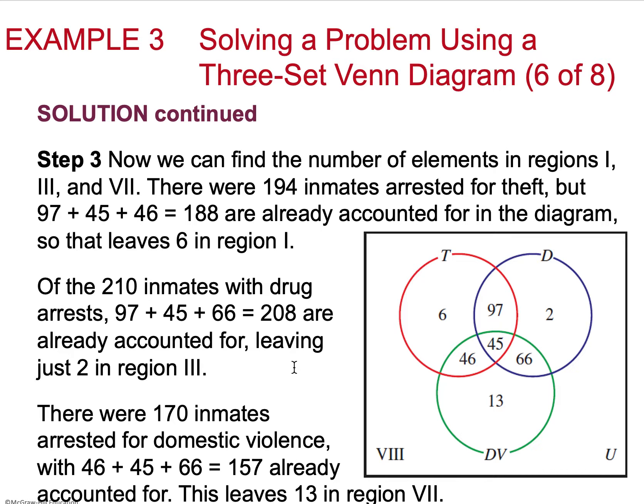So now I know there's 194 inmates arrested for theft, but I've already accounted for 188 from those regions that I've already defined. So that leaves only six left, because if I know the total amount, I should be able to do the 194 minus the 188 that are accounted for, and that tells me what I have left in the theft area. And then I'm going to follow that same process in each of the other areas to find the remaining pieces within that set.